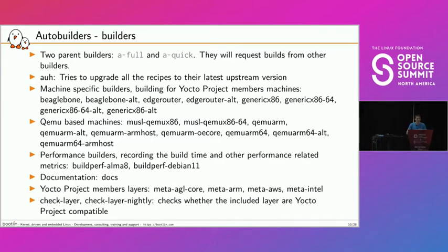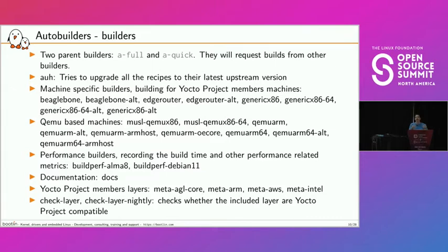We also have AUH (Automatic Upgrade Helper), which tries to upgrade all recipes to their latest upstream version. It never finishes successfully, but it's still useful because some recipes build fine. It's scheduled on the 1st and 15th of each month. We also have machine-specific builders building images for Yocto Project members' machines: BeagleBone for TI, EdgeRouter for Cisco, Intel's generic x86/x86-64. 'alt' variants use systemd instead of sysvinit.